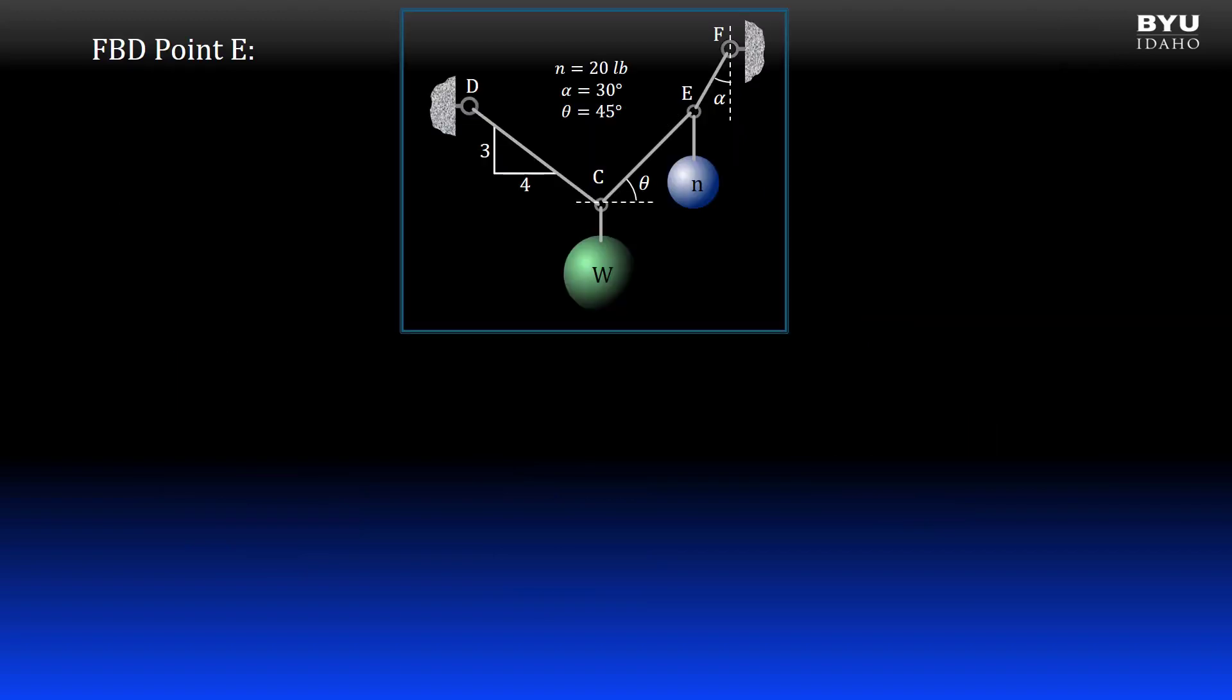Let's begin with the free body diagram of point E. If we analyze it, we see two unknowns. Let's write our two equations of equilibrium.